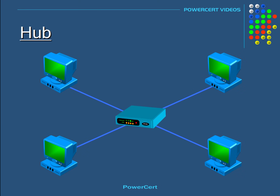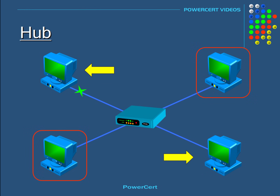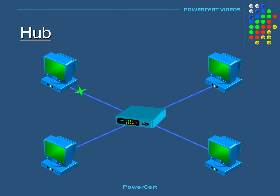So even if one computer only wanted to communicate with another computer, all the other computers would still receive the data, even though the data was not intended for them. When this happens, it not only creates security concerns, but it also creates unnecessary traffic on the network, which wastes bandwidth.